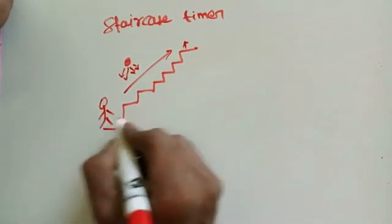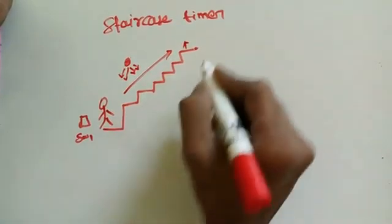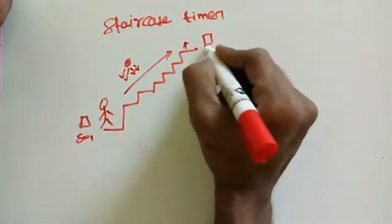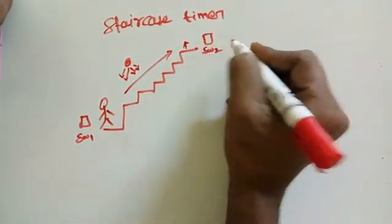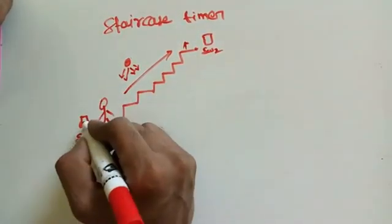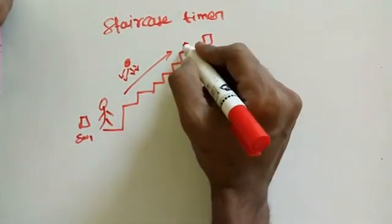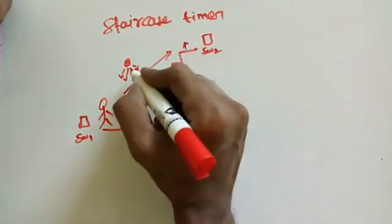Now we make two switches: first switch on here SW1 and second switch on here SW2. These two switches are important. This person only switches on here, then he goes and reaches this level, then automatically this lamp going to shut down.